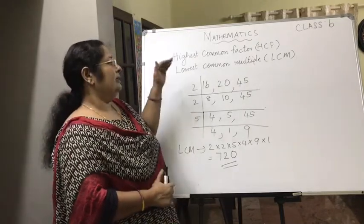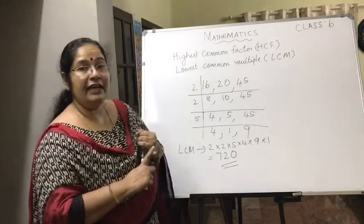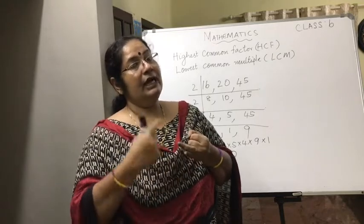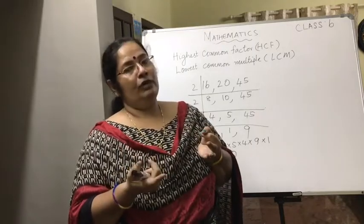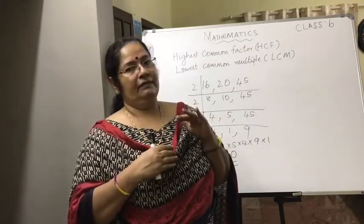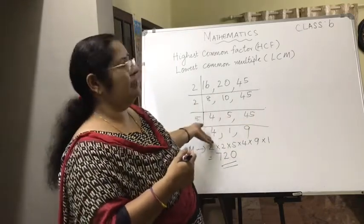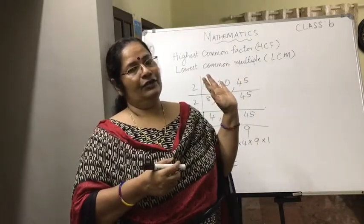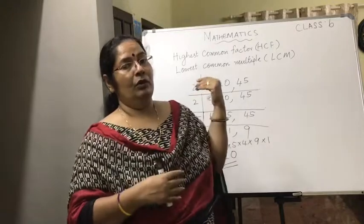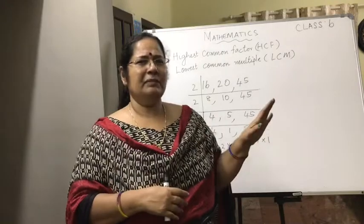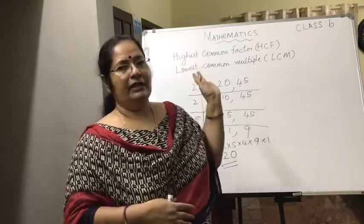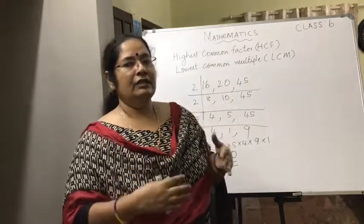In summary, we have learned three methods to find HCF and LCM: first, by finding common factors and common multiples; second, by prime factorization; and third, the division method, which is especially useful for finding the LCM of three or more numbers. For LCM, the division method is recommended; for HCF, prime factorization works well. Use whichever method is easiest for you.